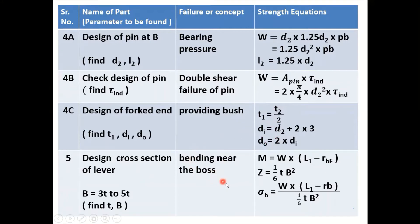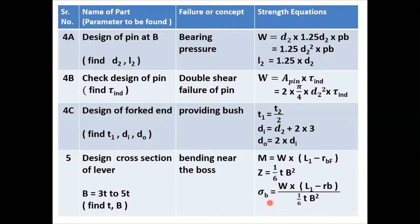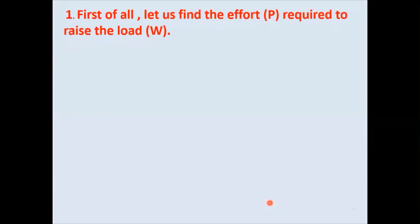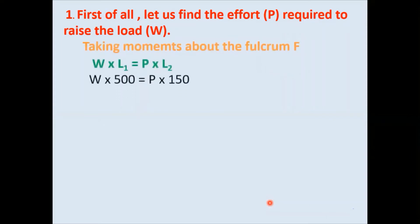The last step is design of the lever for bending failure. Use the equation of bending moment and section modulus, substituting values into the bending stress equation to find t and b. To begin solving: in Step 1, taking moments about the fulcrum, W × L1 = P × L2.